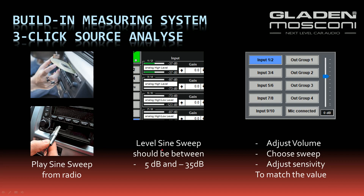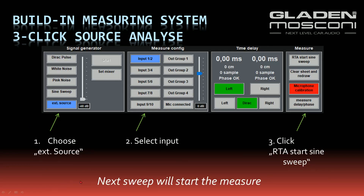You check the input leveling: the sine sweep leveling must be at least minus 35 dB. If you don't reach minus 35 dB, you can adjust the volume on your car stereo, choose another sweep, or adjust the measuring sensitivity. For example, if you reach minus 40 dB on the input monitor, you can increase the measuring sensitivity by 5 dB.